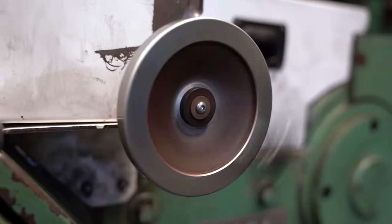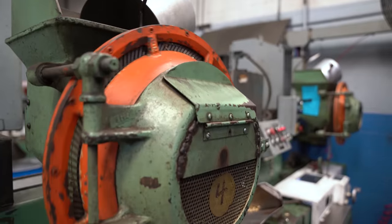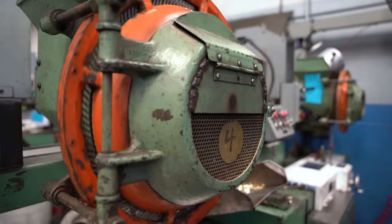The cup becomes a case when a rim is formed at the base with a uniform hollow cavity all the way around the inside. Then each case receives a head stamp.